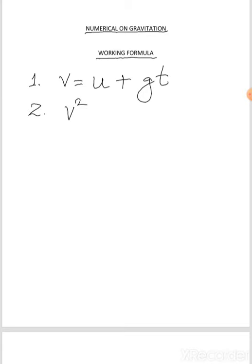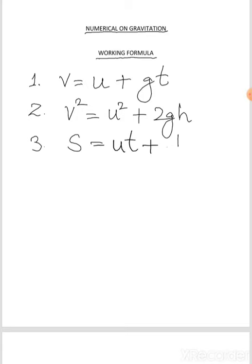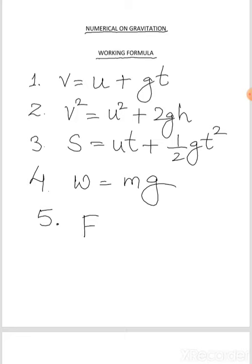Before we do the numericals from Exercise 3.3E, we need to familiarize ourselves with the formulas we are going to use. Copy all these formulas in your notebook. Formula 1: v = u + gt. Formula 2: v² = u² + 2gh. Formula 3: s = ut + ½gt². Formula 4: W = mg. Formula 5: F (gravitational force) = G·M·m / R².